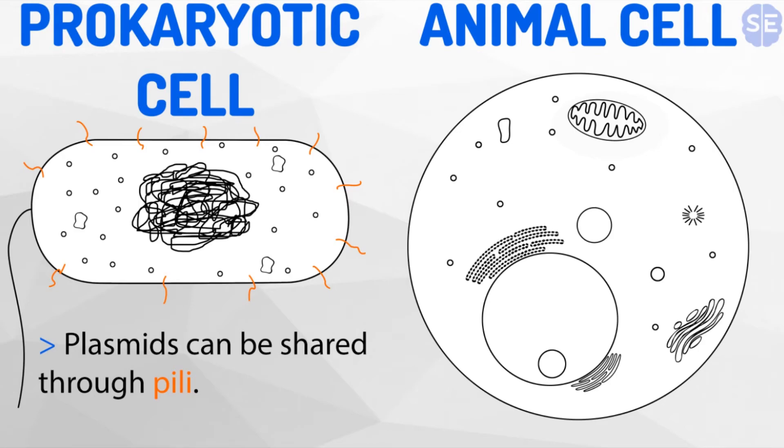Pili allow the transfer of plasmids known as conjugation. Pili also assist prokaryotes in virulence, allowing them to adhere onto other cells or surfaces.